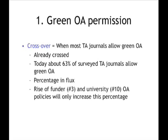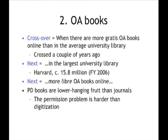The second crossover point which has already occurred is for open access books, at least for gratis open access books. The crossover comes when there are more gratis open access books online than in the average university library. I wish I could be more precise about when we crossed over, but I can't. I couldn't even get a good estimate of how many books there are in the average university library — the best number I found was a dated figure for England: 700,000 volumes. Google now offers 1,500 gratis open access books for your mobile phone alone, so I think we crossed this one over a couple of years ago.